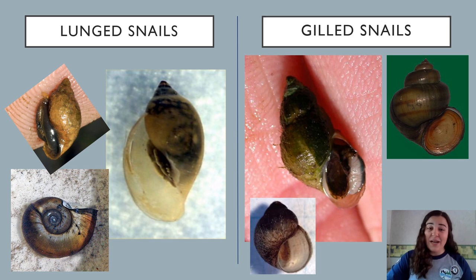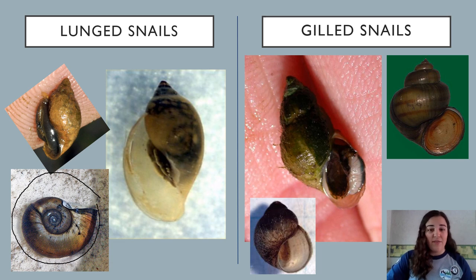Another way to tell the difference is that lunged snails can come in different shapes and sizes, like this shell right here, but gilled snails will never have a shape like this.